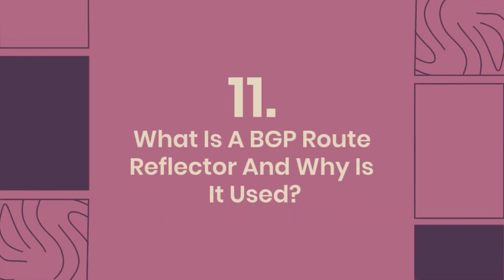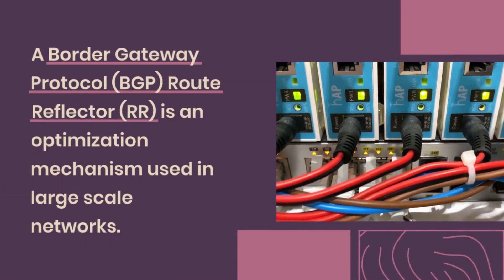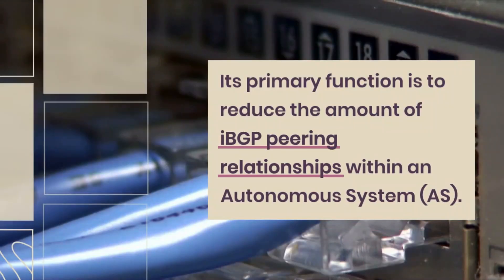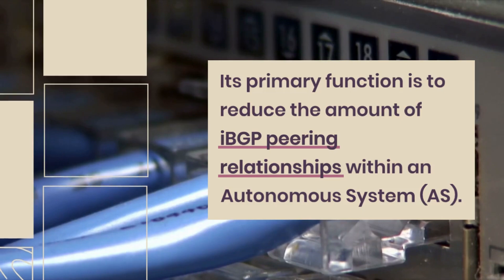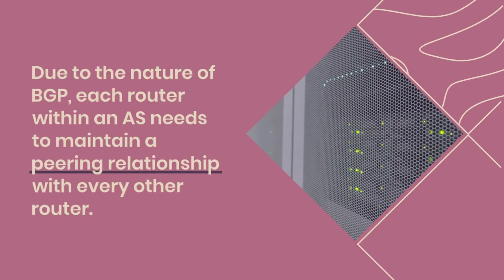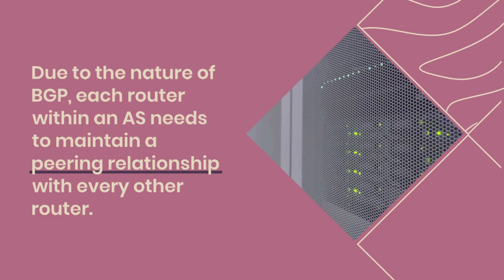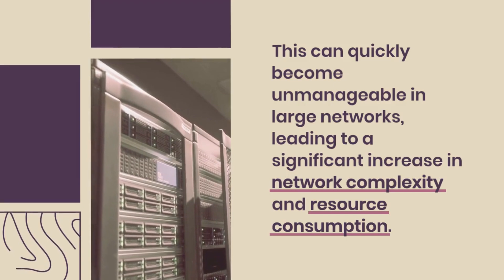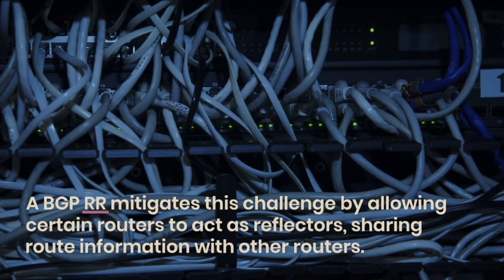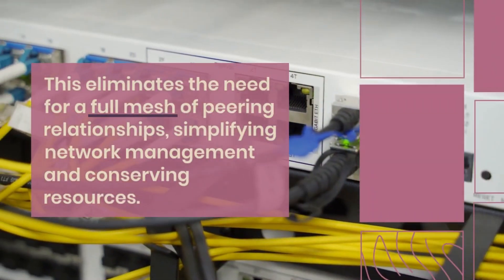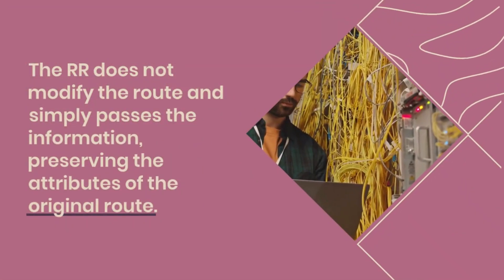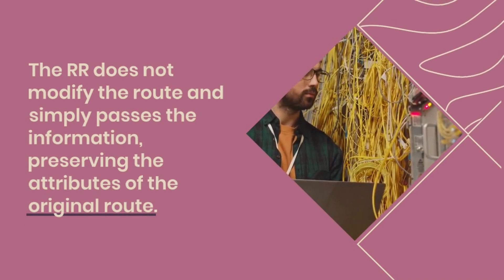What is a BGP route reflector and why is it used? A BGP route reflector, RR, is an optimization mechanism used in large-scale networks. Its primary function is to reduce the amount of IBGP peering relationships within an autonomous system. Without it, each router within an AS must maintain a peering relationship with every other router, becoming unmanageable in large networks. A BGP RR mitigates this by allowing certain routers to act as reflectors, sharing route information with others, eliminating the need for a full mesh, and simplifying network management. The RR does not modify routes — it simply passes information, preserving original route attributes.